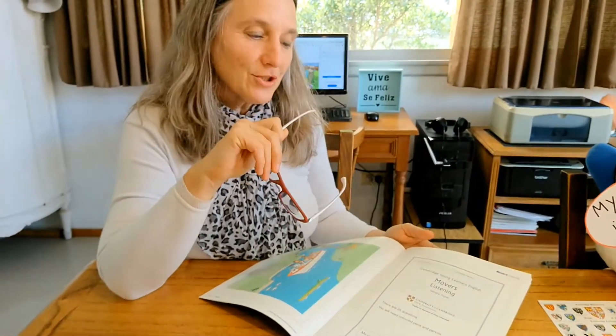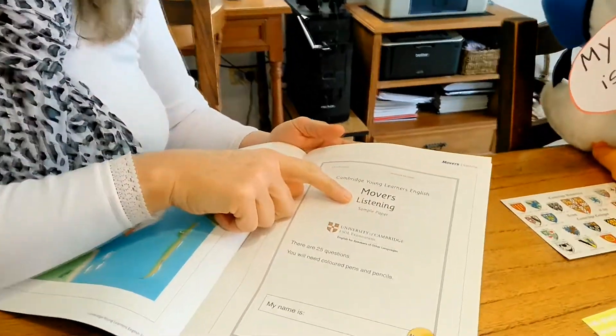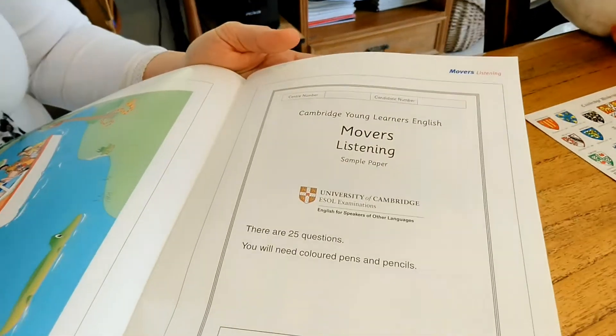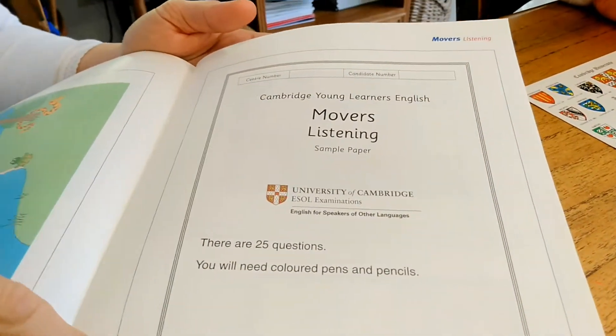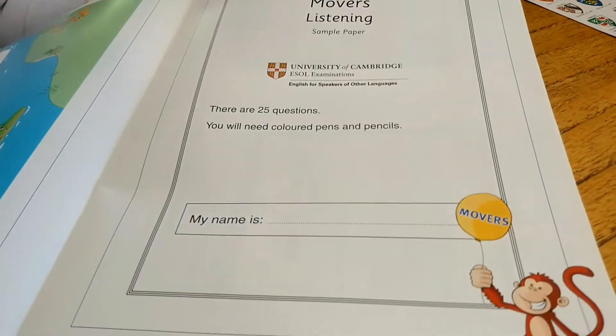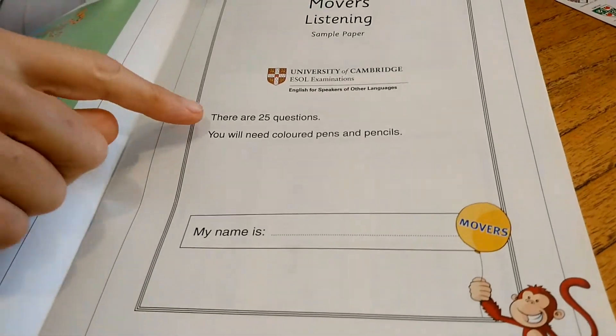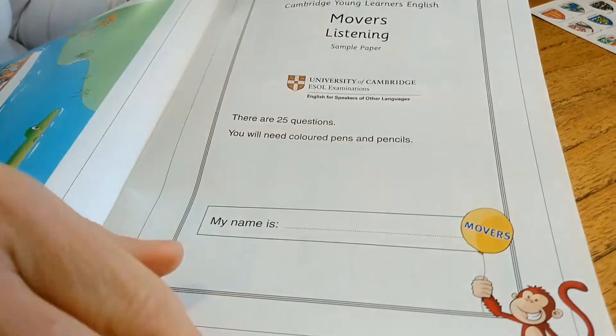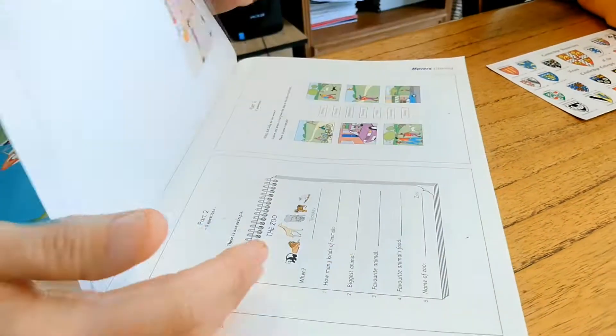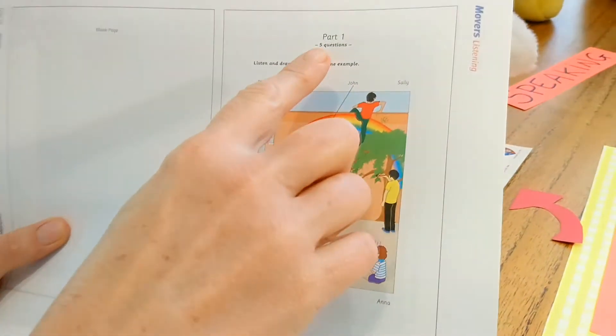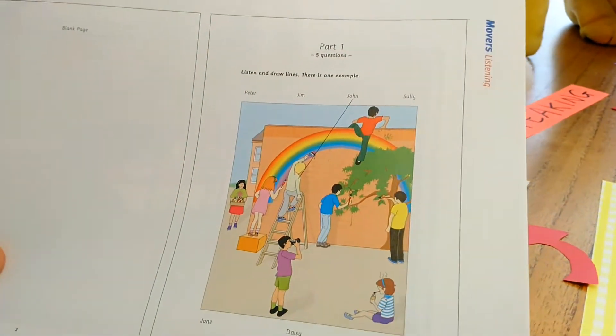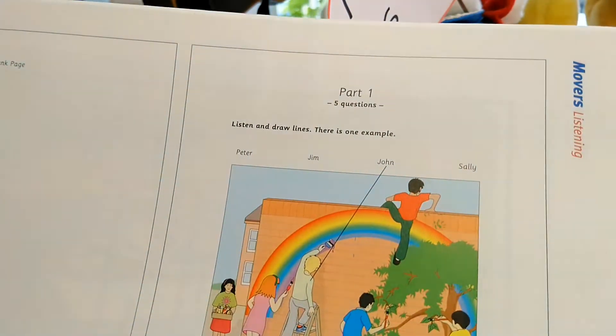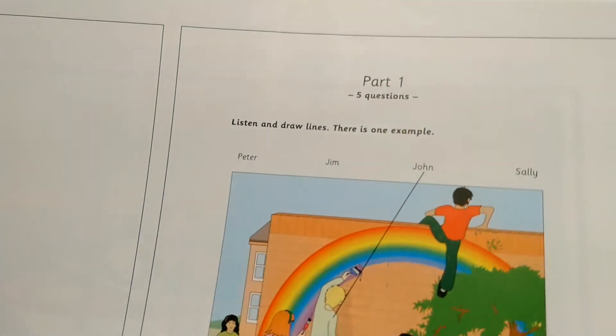Now I will show you a sample test. Look. Movers listening sample paper. On the first page you need to write down your name and you complete it. And you know that you have 25 questions to answer and that you will need colored pencils. Part one is look at the picture, listen and draw lines. And there is one example.